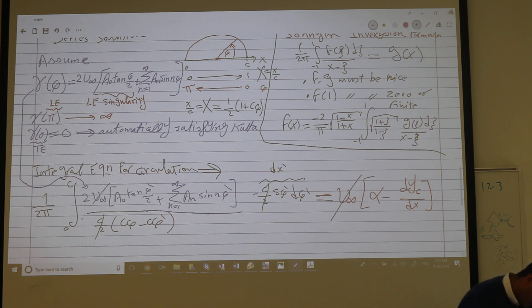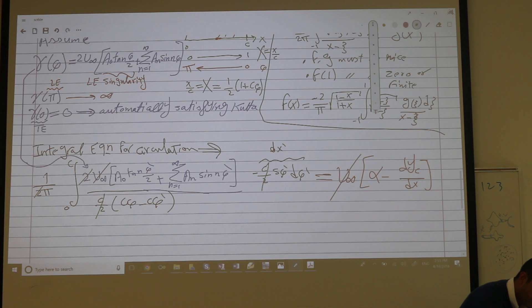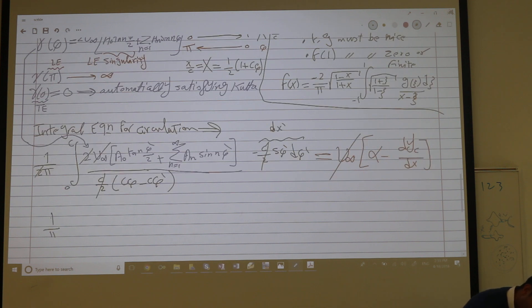I can also divide by u infinity and this 2 can cancel, and we end up with this equation. 1 over pi integral, well if this was from 0 to c but now the integral over phi.